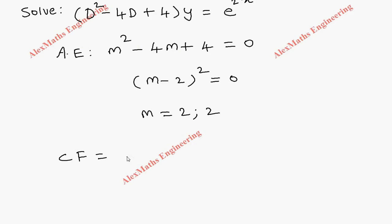So the complementary function for this is nothing but (c₁ + c₂x)e^(mx), where m is 2, so (c₁ + c₂x)e^(2x).